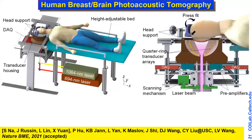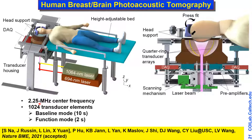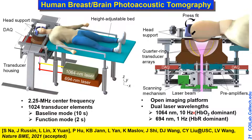We developed a next-generation imaging system with isotropic resolution using a hemispherical structure with 1,000 transducer elements. For breast imaging we use 2.25 MHz centered ultrasound frequency. For functional brain imaging the baseline mode is 10 seconds and functional mode is only 2 seconds. This is an open imaging platform using dual laser wavelengths to quantify both oxyhemoglobin and deoxyhemoglobin concentrations.